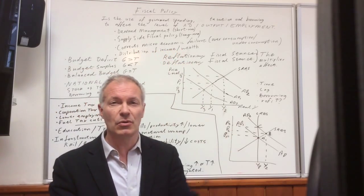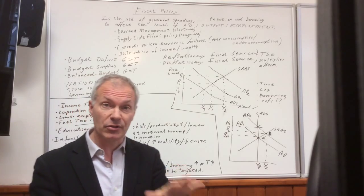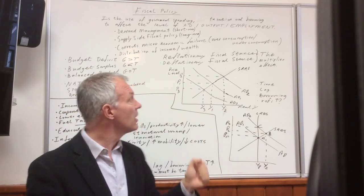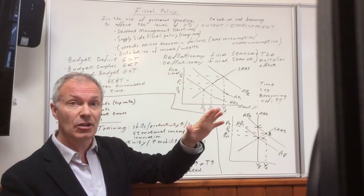And the fourth area, which is incredibly important, and again an area of contention between right and left, is the role of taxation in redistribution of income and wealth.